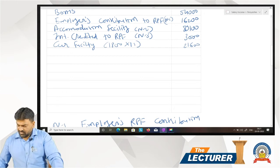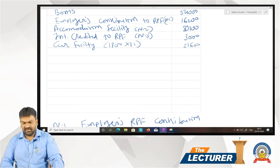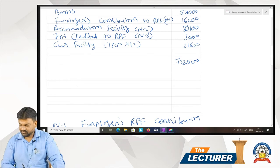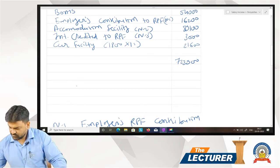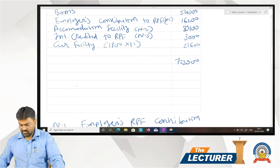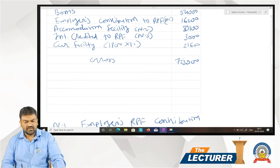Total: 5,40,000 plus 54,000 plus 16,200 plus 89,100 plus 3,000 plus 21,600 equals 7,23,900. Gross salary is 7,23,900. This is your answer.